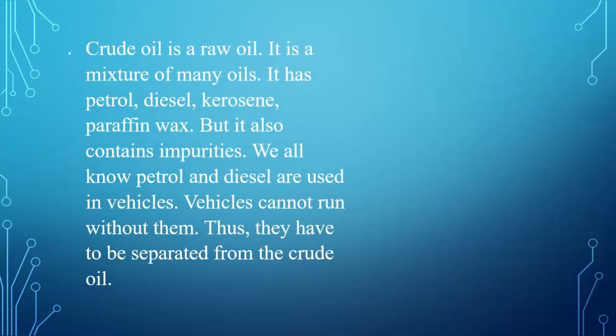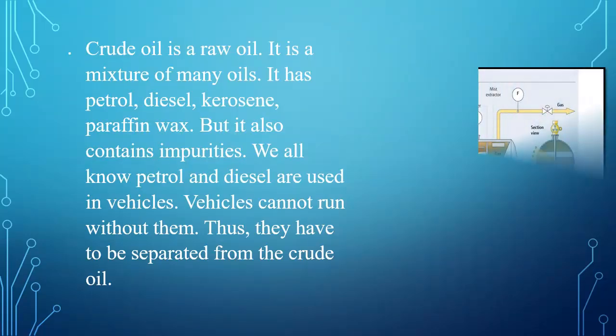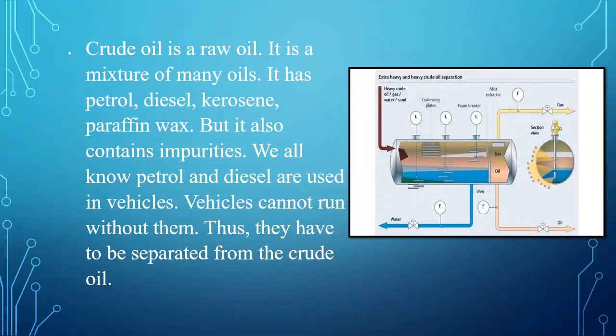Crude oil is a raw oil — it is a mixture of many oils. It contains petrol, diesel, kerosene, and paraffin, but it also contains impurities. We all know petrol and diesel are used in vehicles, and vehicles cannot run without them. Thus, they have to be separated from the crude oil, just like shown in the picture of how crude oil is refined to yield diesel and petrol used in vehicles.